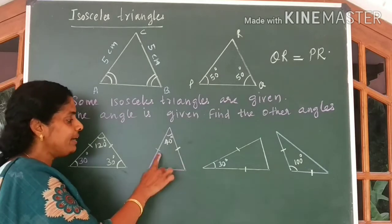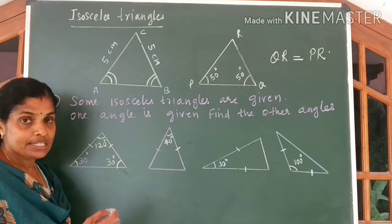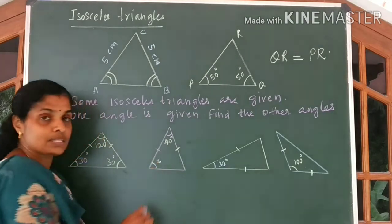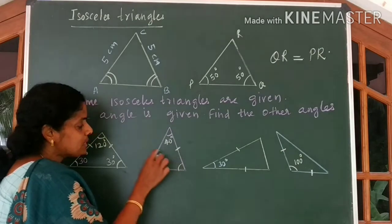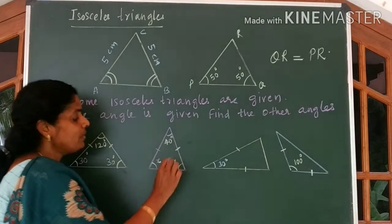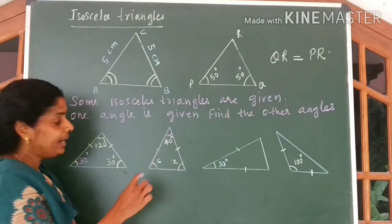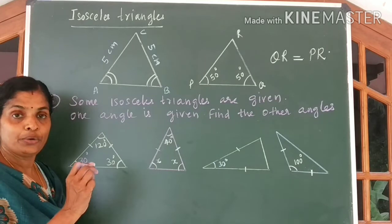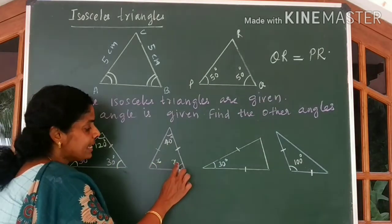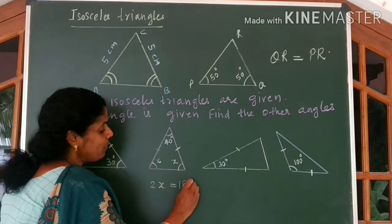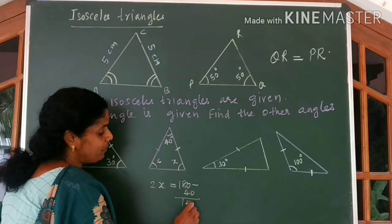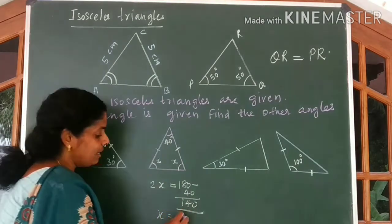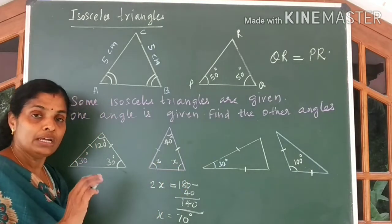Come to this figure. These two sides are given to be equal. The angles opposite to these equal sides are equal — let me name each as X. The sum of all angles in a triangle is 180 degrees. Therefore X plus X, that is 2X, equals 180 minus 40, which is 140 degrees. Therefore X equals 140 divided by 2, which is 70 degrees. Each of the base angles is equal to 70 degrees.